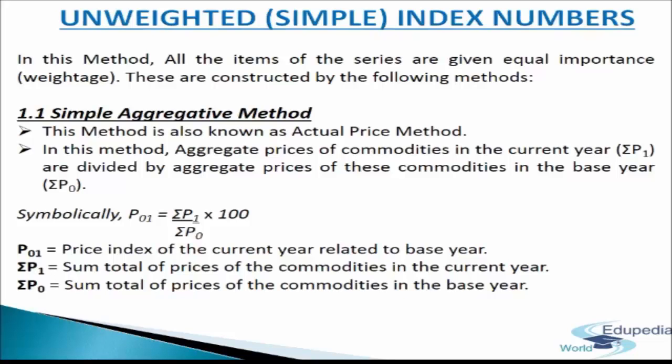Where P01 is the price index of the current year related to the base year; Sigma P1 is the sum total of prices of commodities in the current year; and Sigma P0 is the sum total of prices in the base year. The current year is the year for which index numbers are constructed, and the base year is the year of reference against which change is measured.